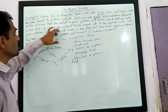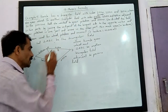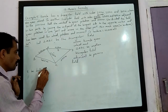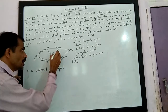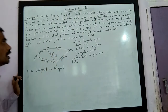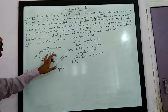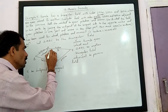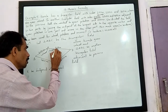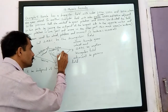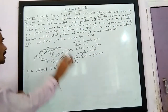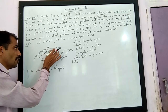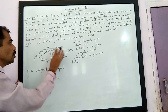She divided the field in two parts by joining the midpoint of the longest side. Let E be the midpoint of the longest side. She divided it into two parts by joining the midpoint of the longest side to the opposite vertex CE. She gave wheat in one part, potatoes in another part, and onions in the third part. We are asked to find the area in hectares used for wheat, potato and onion.